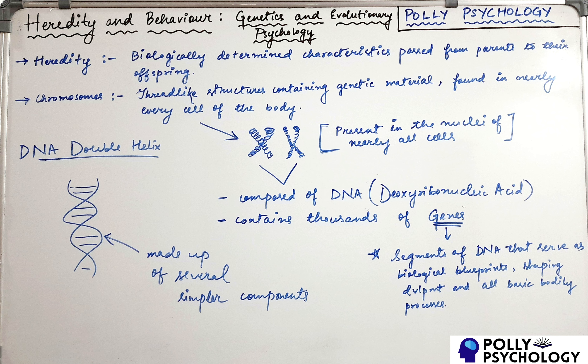If you recall the basic structure of a body cell, there is a cell, and at roughly the center is the nucleus. Inside this nucleus are the chromosomes. These chromosomes contain all the biological blueprints that enable us to perform certain essential functions, which are mostly hereditary in nature. As you can see, I've tried to illustrate the structure of a chromosome — they are thread-like structures present in the nuclei of nearly all cells.